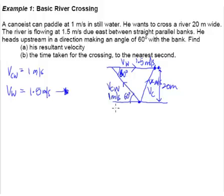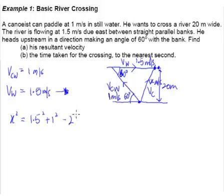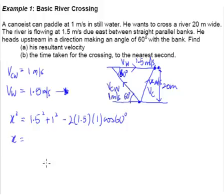To find X is no longer a problem — simply use the cosine rule. Using the cosine rule: X² = 1.5² + 1² − 2 × 1.5 × 1 × cos(60°). Don't forget the square root — many people make that careless mistake. From your calculator, you should get X = 1.32 meters per second.